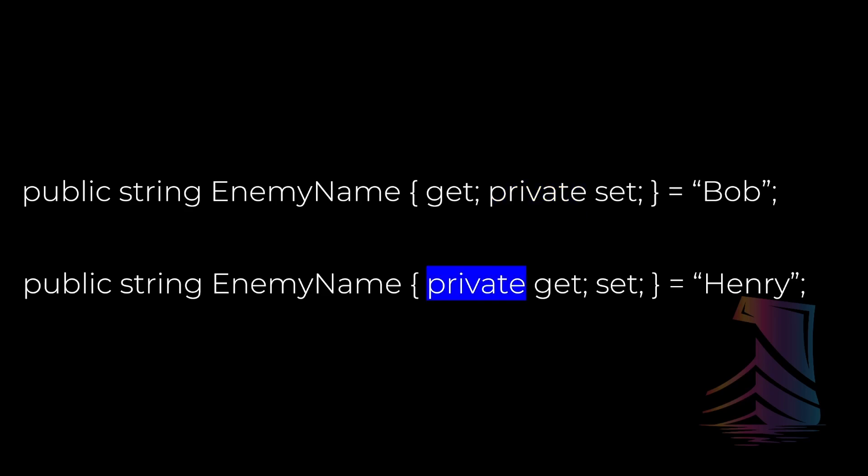This is ideal and is the property pattern you'll use most in your games. In the second example, enemyName can only be retrieved by the class it exists in, but can be changed by any class that has access to it. This is weird, and I can't imagine a scenario where you'd want to do this, but hey, follow your bliss.